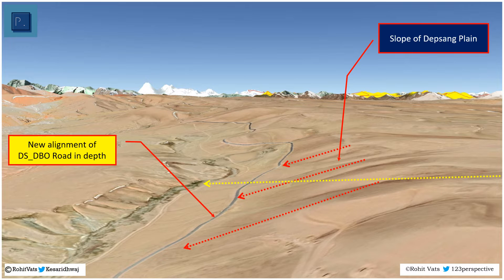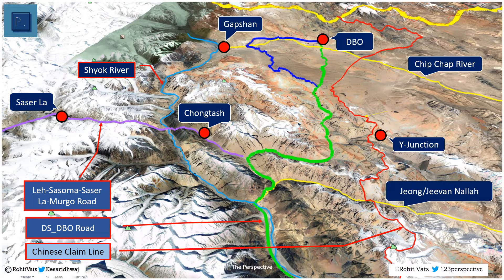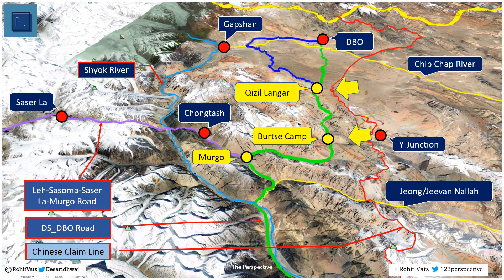Being on the reverse slope, vehicular movement on the road is shielded from Chinese observation, and the reverse slope also provides limited protection against artillery fire. Both the DS-DBO road and the Sasoma-Saser La road converge at Margo, from where the single road passes through a narrow gorge located in proximity to the Chinese claim line. If the Chinese are able to occupy either Qizil Langar, Berthse camp, or Margo, connectivity with the Depsang plains and the DBO sector will be lost.